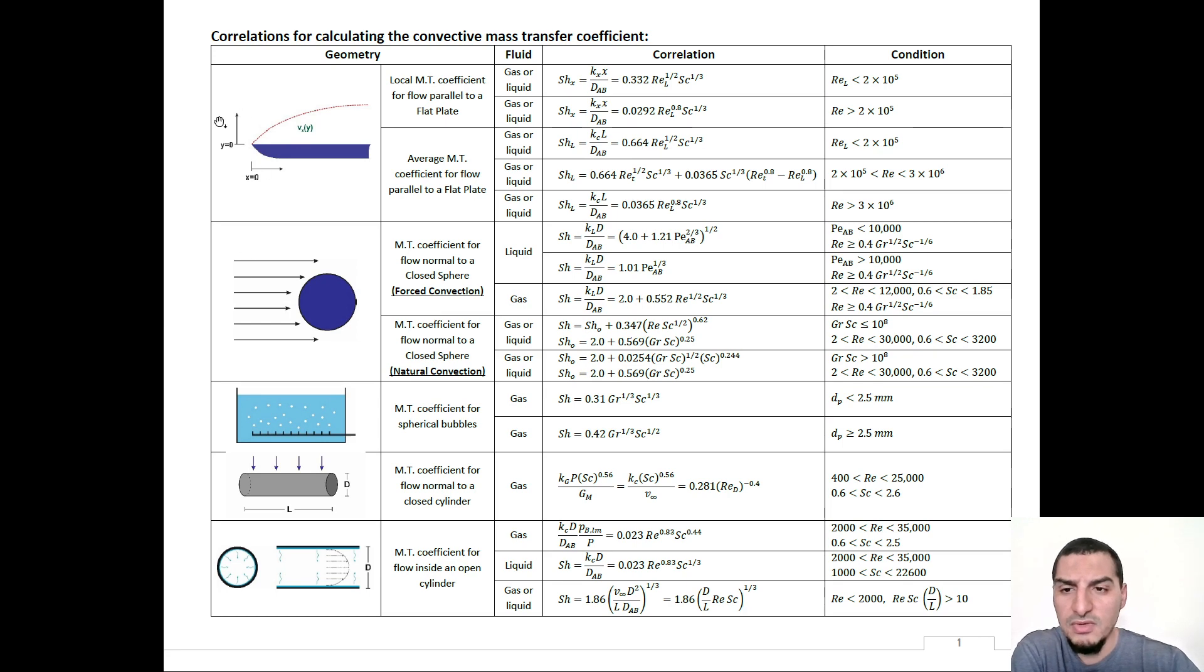For instance, in case of a flat plate, you have the photo of the flat plate, you have option for local or average mass transfer coefficient. The correlation can be used for gas or liquid, and you can see Sherwood number can be calculated using this correlation. The same for local and average mass transfer coefficient.